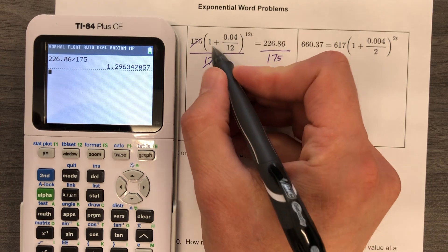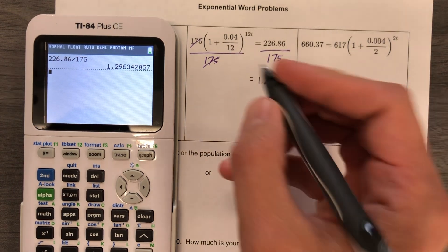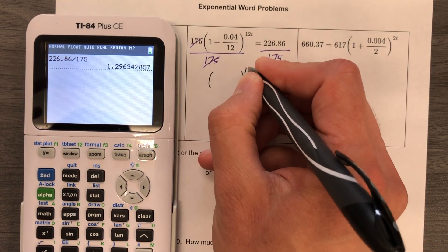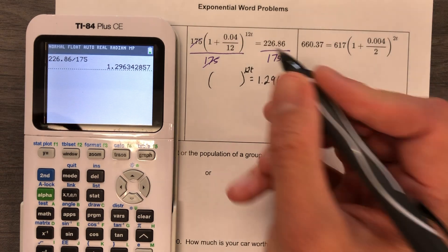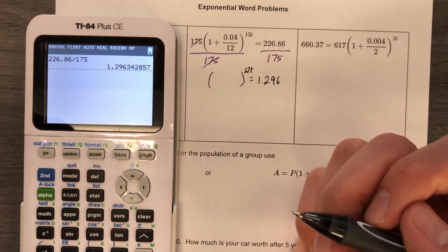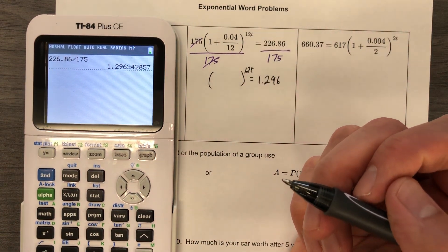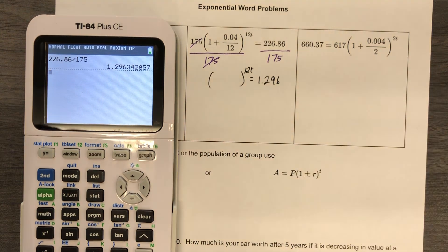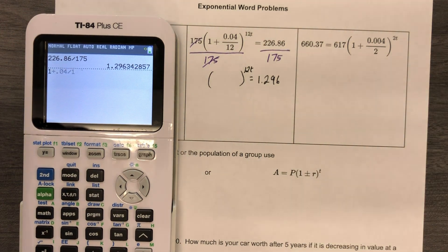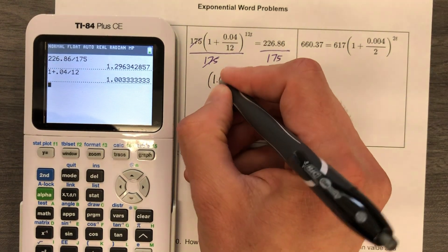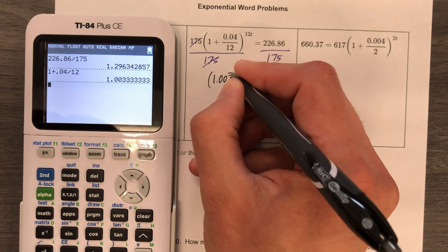Also, while we're at it, all the stuff in the parentheses here, it's ready to go. You can go ahead and figure out what it is. You have 12t as your exponent. Don't panic because there's a variable up there, a number with your exponent, the coefficient. It's okay. 1 plus 0.04 divided by 12 is going to give me, don't round it, 1.003 repeating.